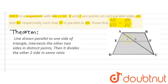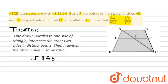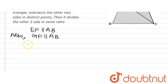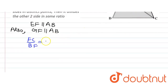We are given that EF is parallel to AB. In triangle ACB, GF is parallel to AB. So by applying the theorem, we can say that FC divided by BF is equal to GC divided by AG. Let's mark this as equation 1.